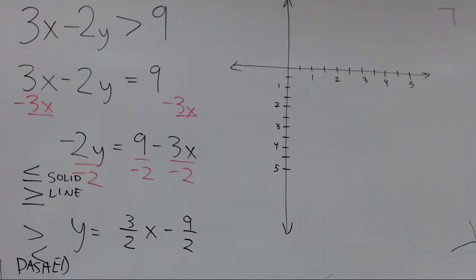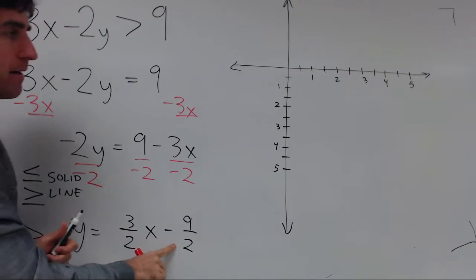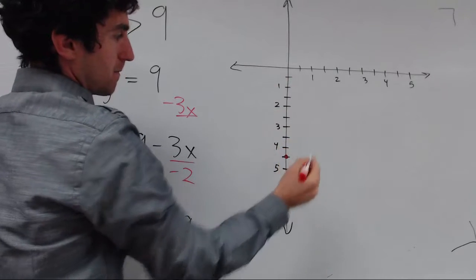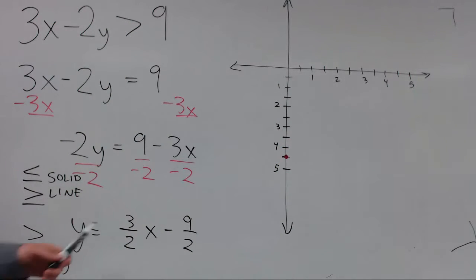So we now have our axes set up, let's go ahead and put a dot for the y-intercept, negative nine halves, right here.